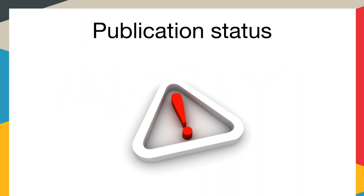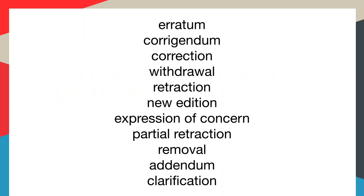The key purpose of the Crossmark service is to let the reader know if there are any changes to the status of a particular publication. We know that many things can happen to content after it's been published — it can be corrected, updated, retracted, or even withdrawn. These things may happen soon after publication, or they could happen months or even years later. One of the main purposes of Crossmark is to make sure there's a consistent and reliable way for readers to be notified of these important changes.